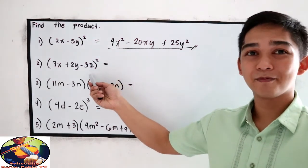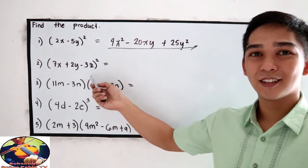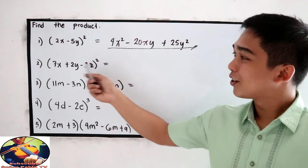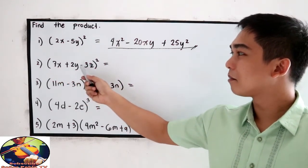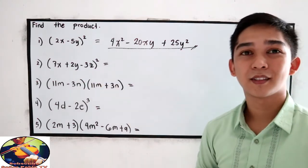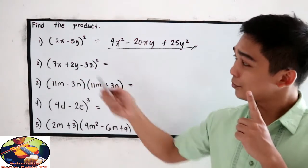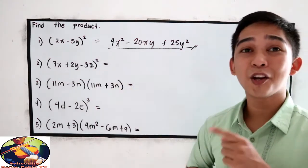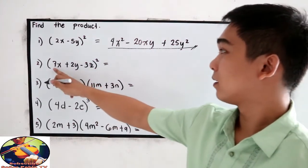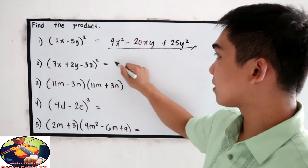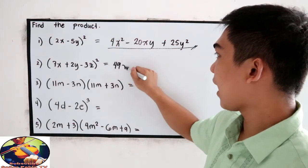Number 2. Quantity 7x plus 2y minus 3z squared. So, square of a trinomial. Square the first term. So, 7x squared, that is 49x squared.